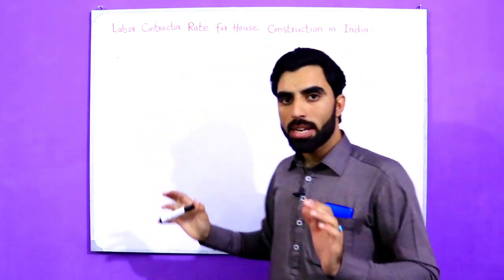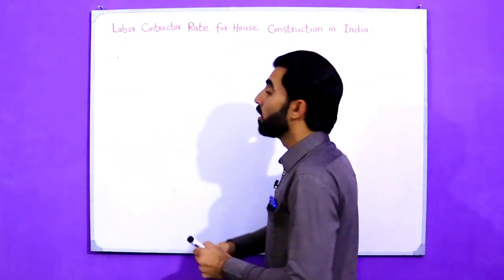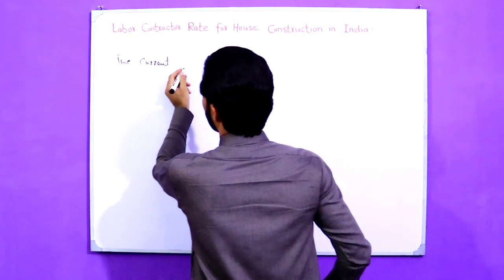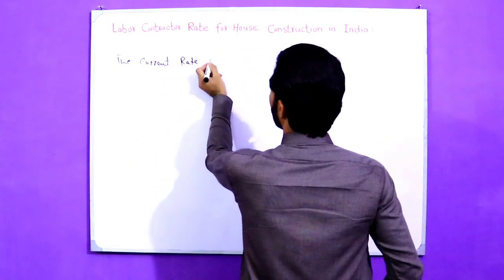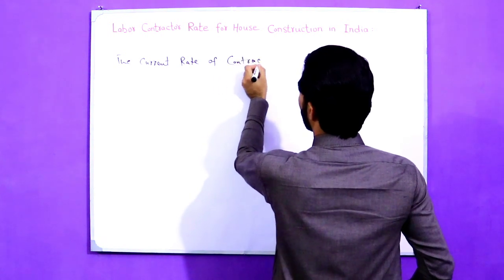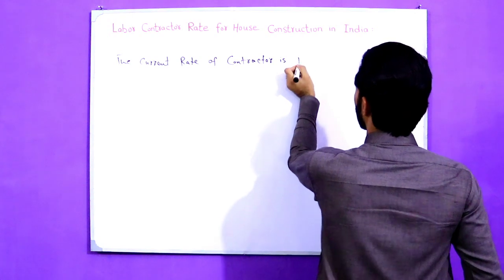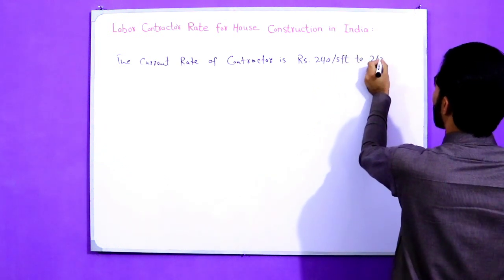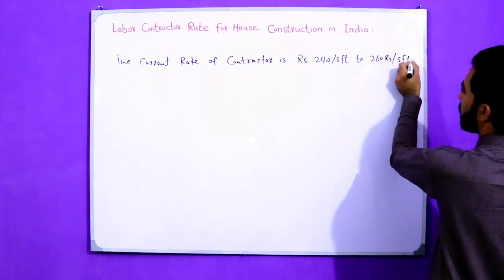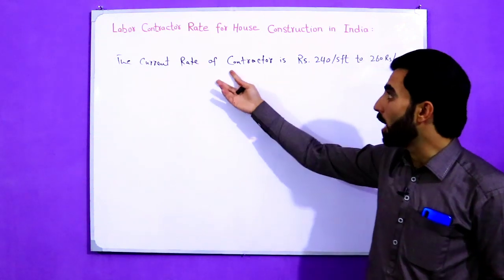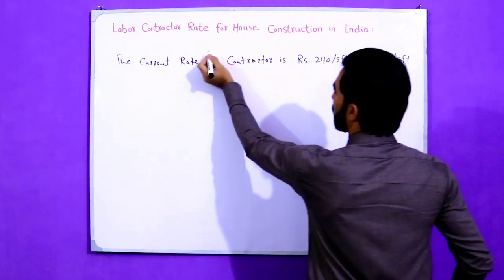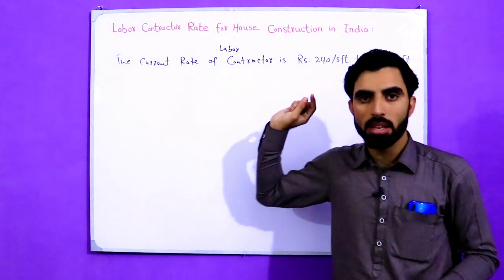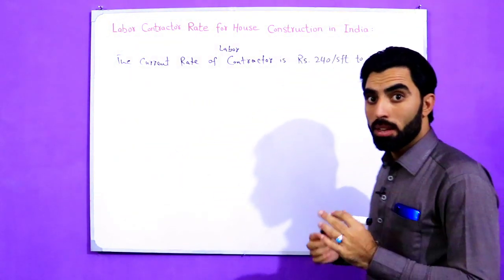The current rate of labor contractor for house construction in India is 240 rupees per square feet to 260 rupees per square feet. This is the current rate of labor contractor in India.